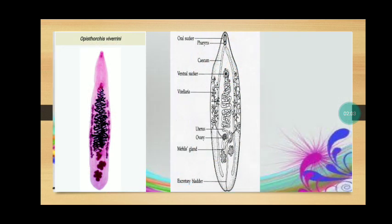The image shows the microscopic image of Opisthorchis viverrini and its major parts, including the oral sucker, pharynx, cecum, ventral sucker, vitellaria, uterus, ovary, Mehlis gland, and excretory bladder.